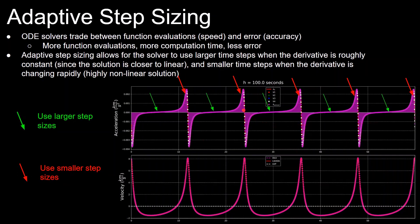ODE solvers therefore make trades between function evaluations, which translates to compute time, and error from the true solution of the differential equation, which is the accuracy of the solution. But instead of just using the same step size the whole time, you can change that step size based on the dynamics of the system over time.